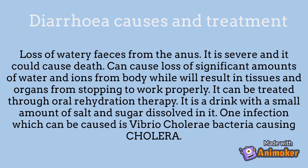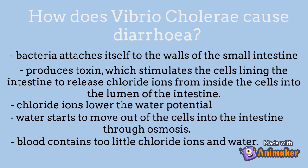Diarrhea can be treated through oral rehydration therapy — a drink with a small amount of salt and sugar dissolved in it. One infection causing diarrhea is Vibrio cholerae bacteria causing cholera. The bacteria attaches to the walls of the small intestine, produces a toxin stimulating cells to release chloride ions into the lumen, lowering water potential, so water moves out of the cells by osmosis.